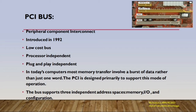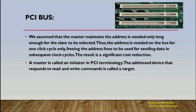In PCI, the configuration of a computer system refers to the arrangement of each of its functional units according to their nature, number, and chief characteristics. The master maintains the address only long enough for the slave to be selected; the address is needed on the bus for one clock cycle only, freeing the address lines to be used for sending data in subsequent clock cycles. This results in significant cost reduction.